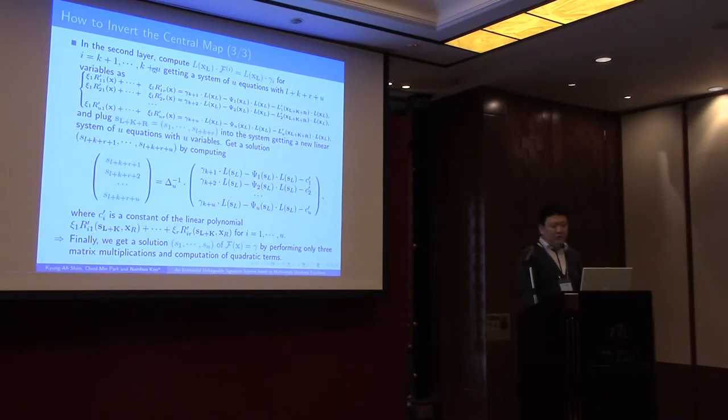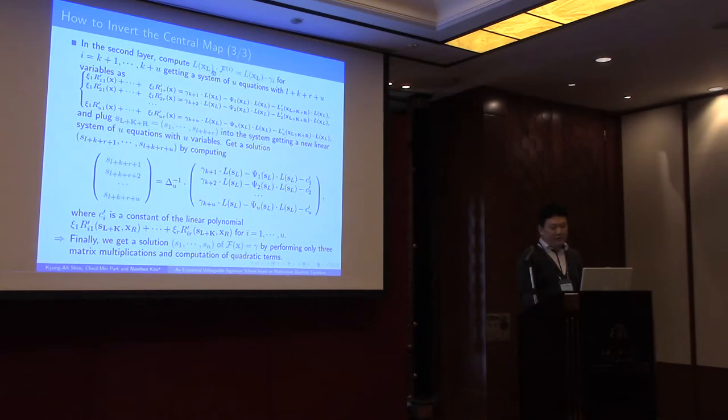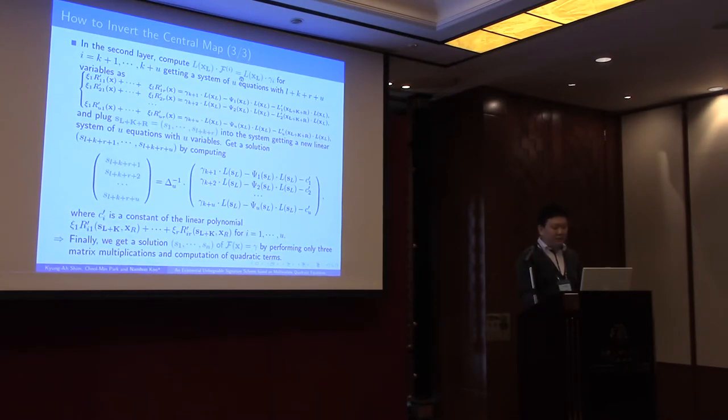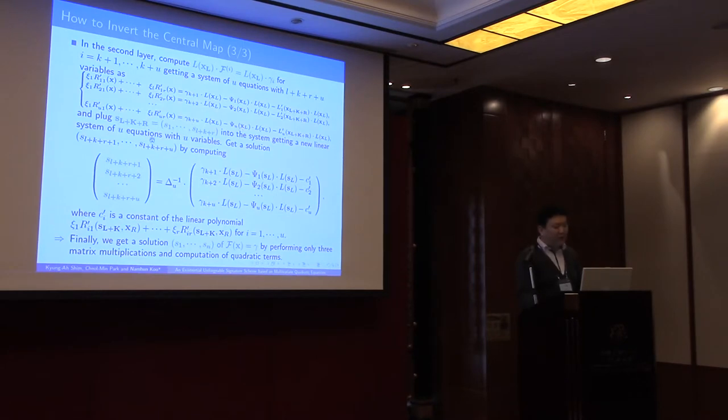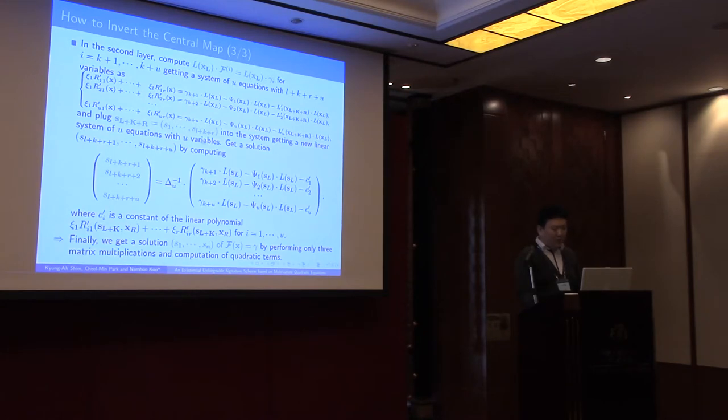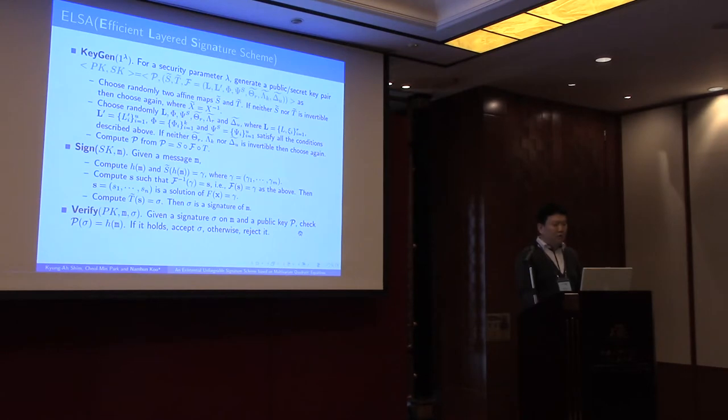In the second layer, it is similar with the first layer. Multiply L(x) of L on both sides of equations in the second layer to get this system. This multivariate system. And plug this vector into this system to get a new linear system of u equations with u variables. This new linear system can be solved by this matrix multiplication. Finally, we get this solution of F(x) equals gamma by performing only three matrix multiplications and computation of quadratic terms without Gaussian elimination.